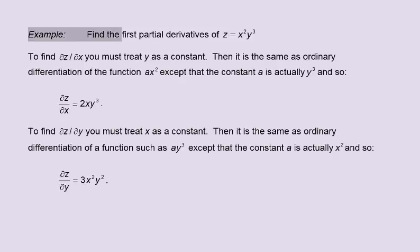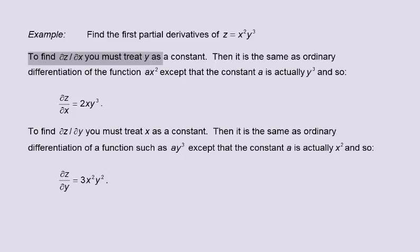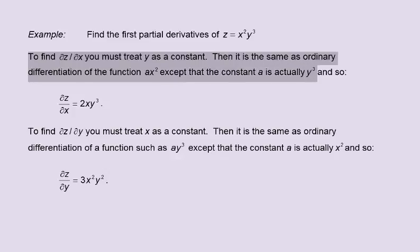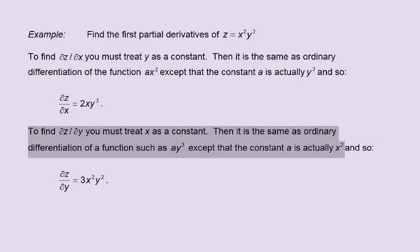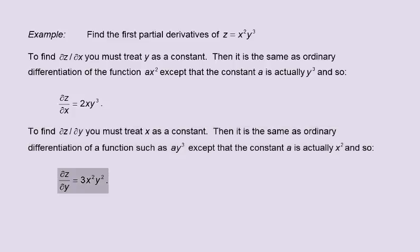Example: find the first partial derivatives of z equals x squared multiplied by y cubed. To find partial z by partial x, treat y as a constant. It is then the same as ordinary differentiation of ax squared, where the constant a is actually y cubed, giving partial z by partial x equals 2x multiplied by y cubed. To find dz by dy, treat x as a constant, the same as differentiating ay cubed where a is x squared, giving partial z by partial y equals 3x squared multiplied by y squared.